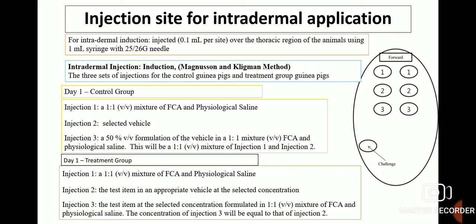For the intradermal induction injection site, 0.1 ml injection per site will be applied over the thoracic region of the animals using a 1 ml syringe with a 25 or 26 gauge needle. Intradermal injection involves induction in the Magnussen and Klingman method. Three sets of injections for both control and treatment guinea pigs can be done, as shown in the figure indicating where these injections should be given.